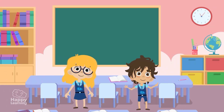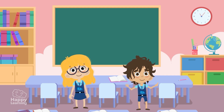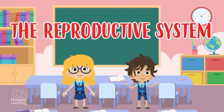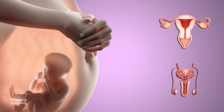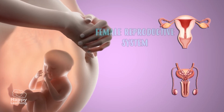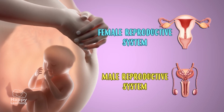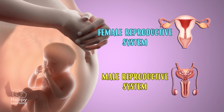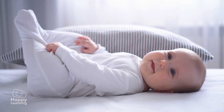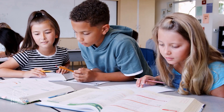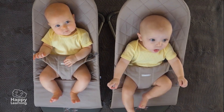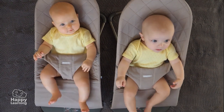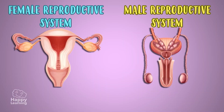Hello friends, and welcome to a new Happy Learning video. Today, we're going to learn about the female and male reproduction system. When we are born, there are a series of characteristics which clearly differentiate a woman from a man's body — these are the sexual organs. As we grow, our bodies change, and it is easier to tell us apart. But when we're little, when we're still babies, it isn't so easy to tell the difference at a simple glance, don't you think?